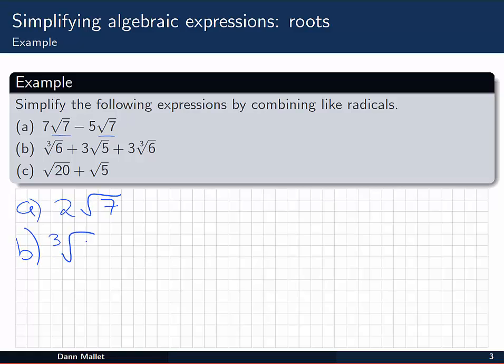In part b we've got the cube root of 6 plus 3 times the square root of 5 plus 3 times the cube root of 6. Here we have a couple of terms which are like and some which are not. We've got a cube root and a cube root, that's important first of all, and it's of the same number. So these highlighted terms are like.